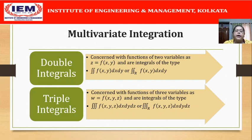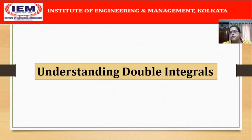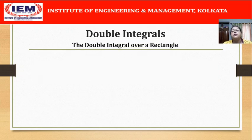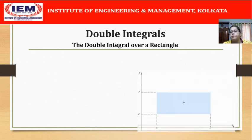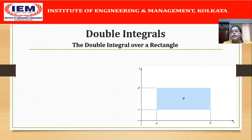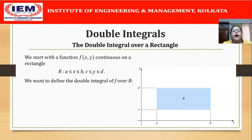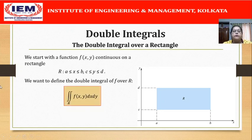We will begin our journey with understanding double integrals. At the onset, we will understand double integrals over a rectangular region, and later it will be extended for an arbitrary region. So we have a rectangle r where x varies from a to b and y varies from c to d. We start with a function f(x,y) which is defined and continuous on this rectangle r, and we now want to define the double integral of f over r, denoted as ∬f(x,y) dx dy over r.